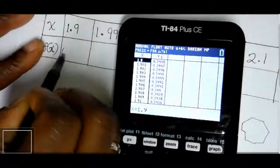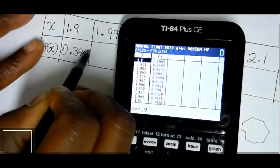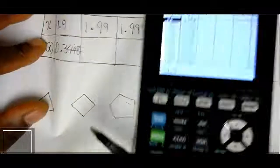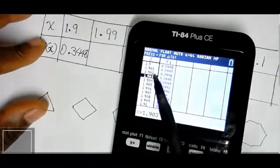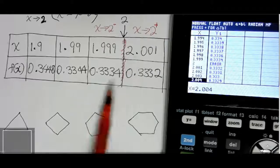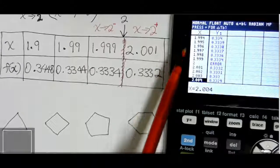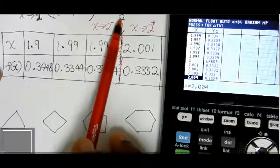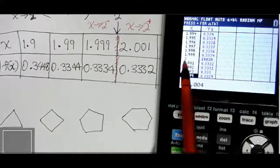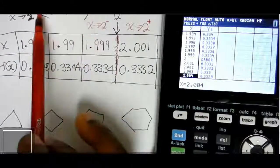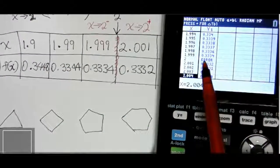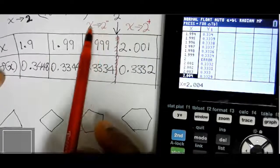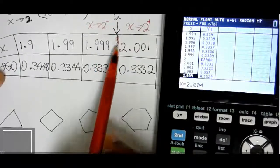Now go to Table Set — that's Second Window — and set the table to start at 1.9. Set the increment to 0.00001 since we have values going to three decimal places. Then press Second Table to bring up the table. Scroll down to inspect values. At x = 1.9 the value is approximately 0.3448. Continue scrolling down to find values at 1.99 and beyond.